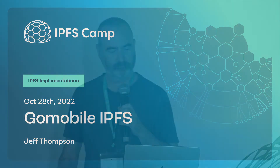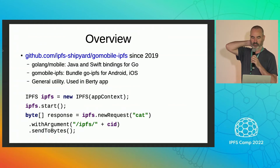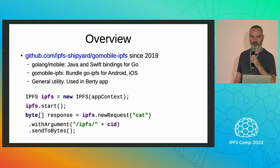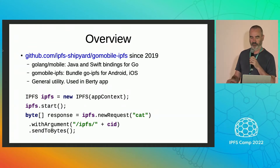What is Go Mobile IPFS? It's a GitHub project since 2019, based on a service from Golang which sets up Java and Swift bindings for Go. It processes all the Go code and creates all the signatures so you can call it from Java and Swift. Go Mobile IPFS bundles Go IPFS so that you can use it on Android and iOS.